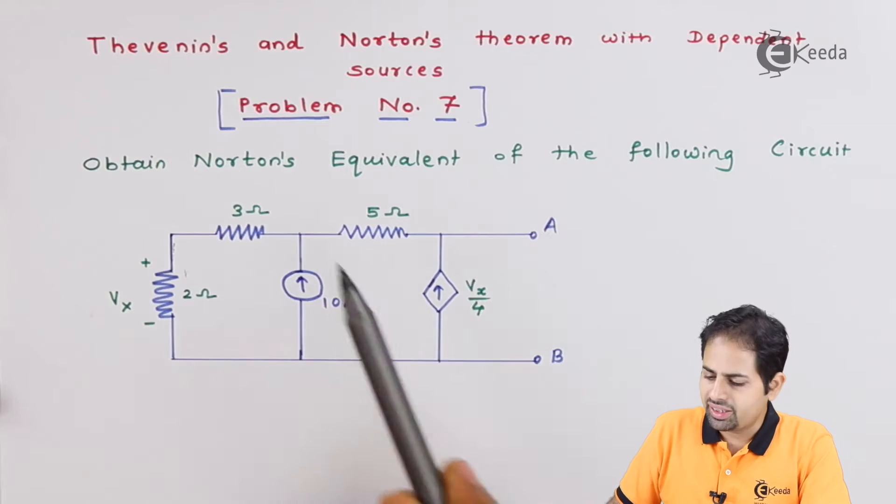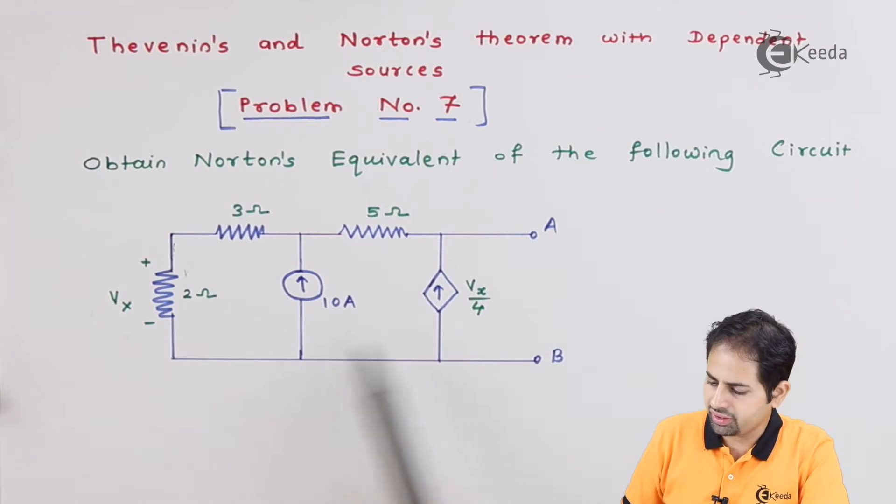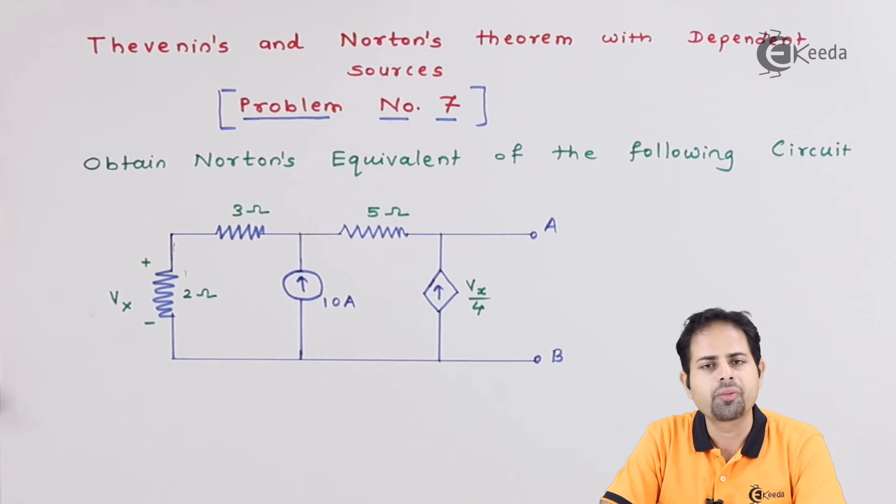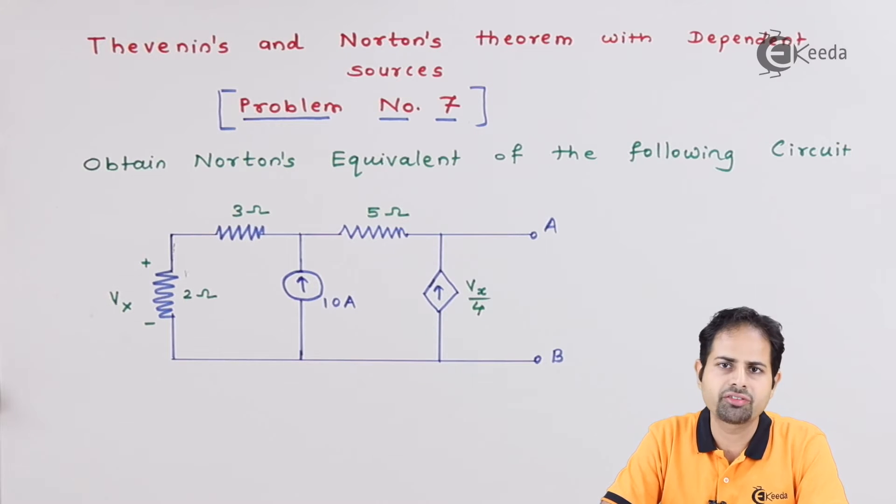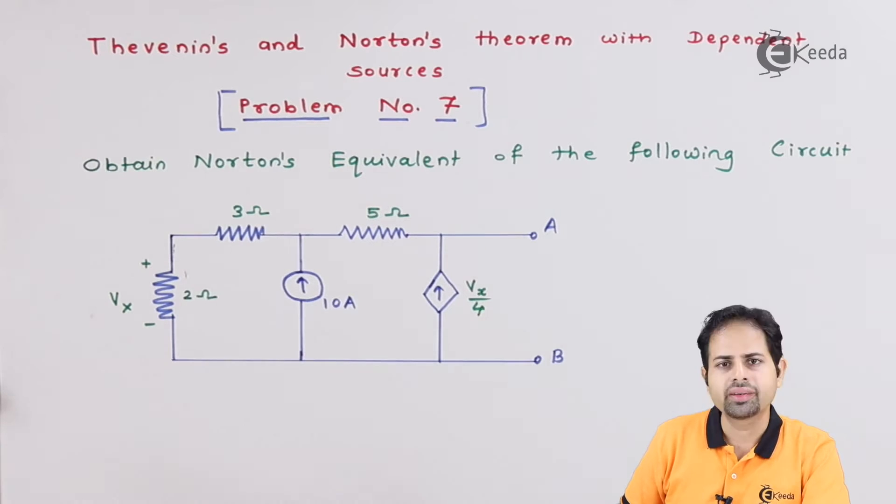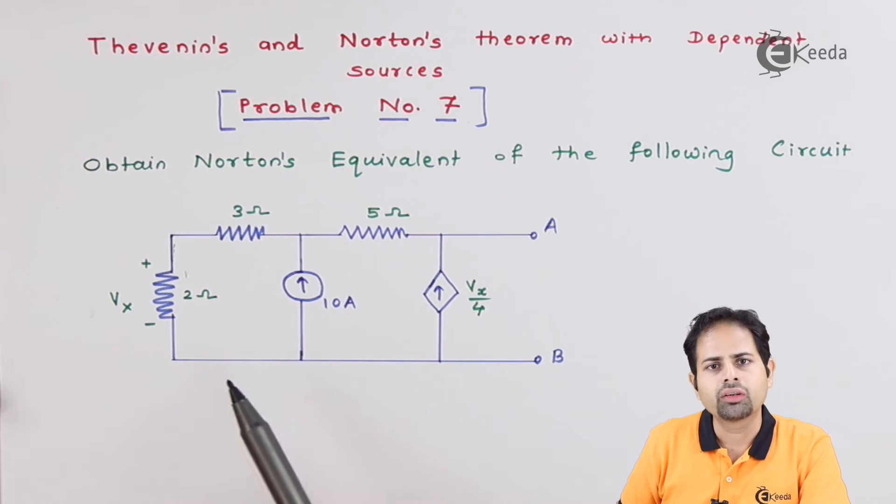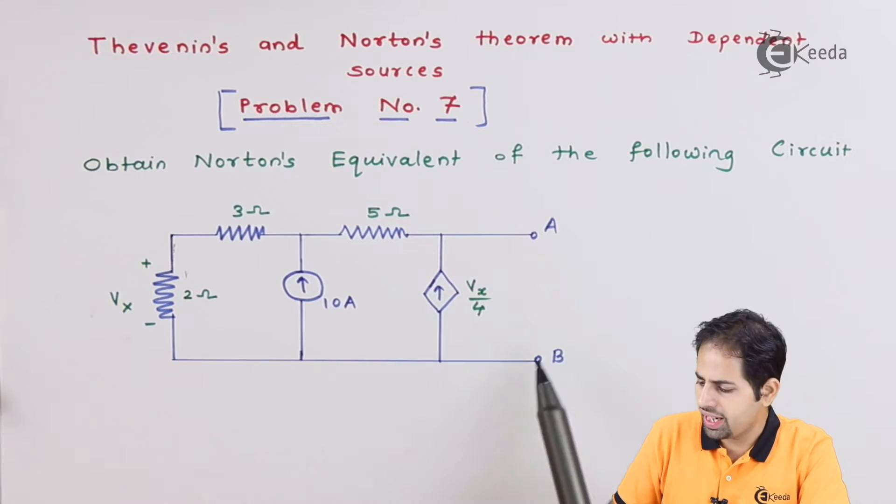This question asks to obtain the Norton's equivalent of the following circuit. Now what is Norton's equivalent? That means we have to rearrange this circuit in such a way that it must have one total current source then one resistance in parallel across this A and B branch.